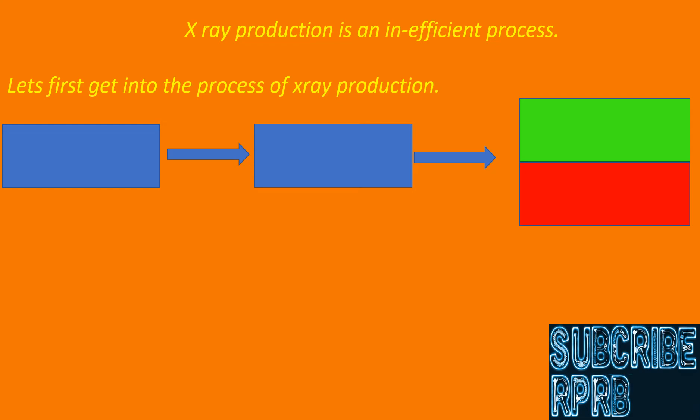Electrical energy is provided to the X-ray tube when we set a particular kV at the X-ray console. Electrons use this electrical energy to achieve very high kinetic energy.